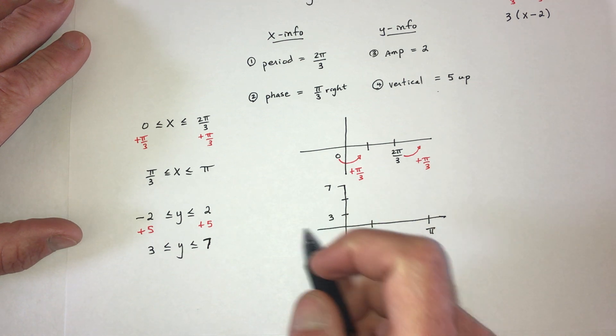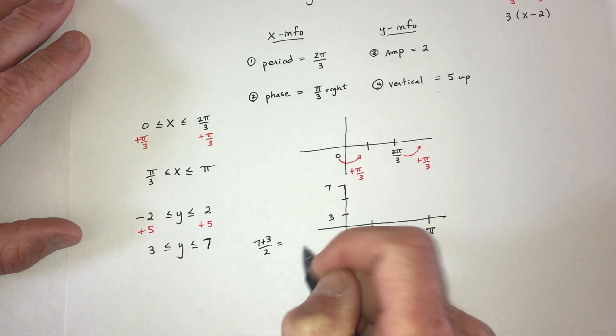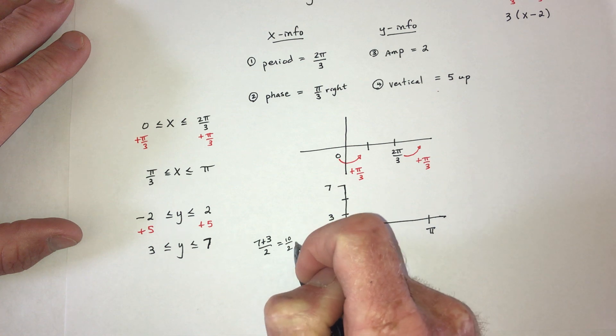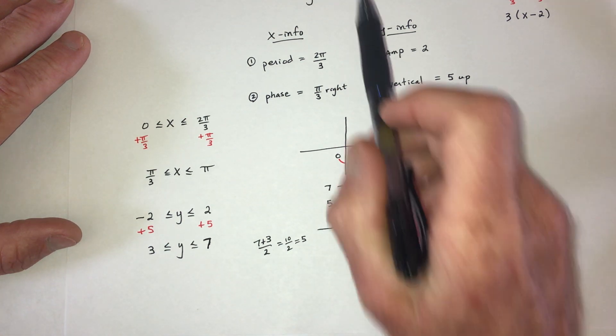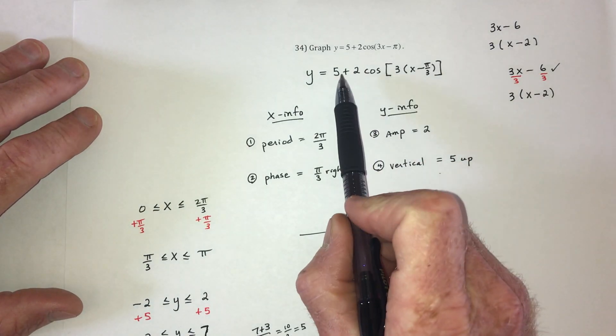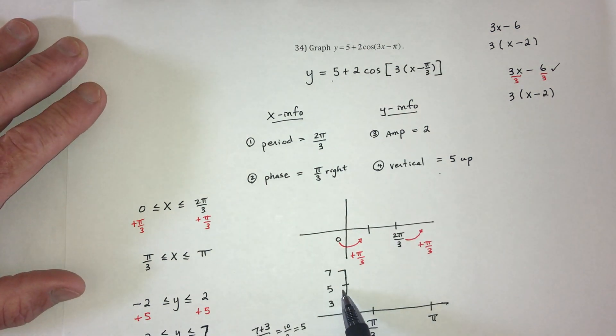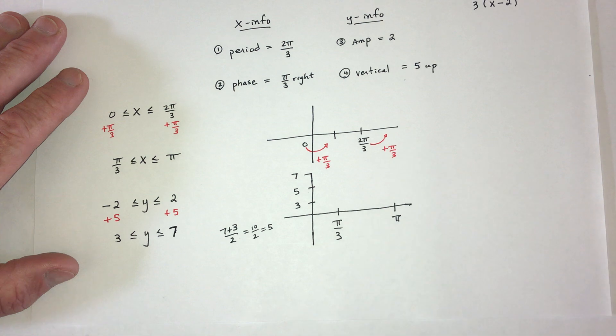So the y-values go from 3 to 7. So let me just extend this a little, 3 to 7. And then what's in the middle of 3 and 7? Well, if you average them, you'll get the middle number. So average would be add them together and divide by 2.